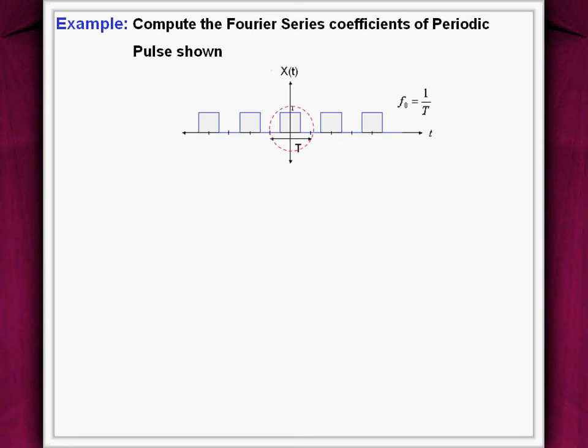T indicates the period of the signal. The A0 coefficient is obtained by integrating over the period of the signal. The limits are modified to minus t by 2 to plus t by 2 as the signal exists in this range. And evaluating, we get the DC value of the signal.